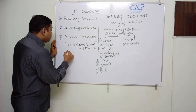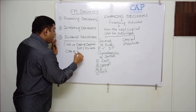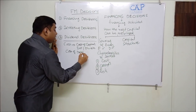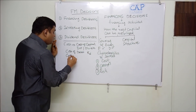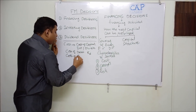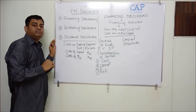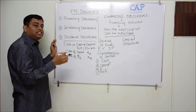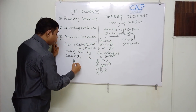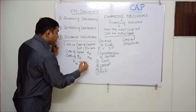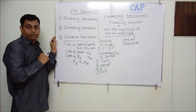Cost of debt is represented by Kd. Similarly, cost of equity fund is represented by Ke. There is one basic fundamental principle in financial management: Ke is always greater than Kd.